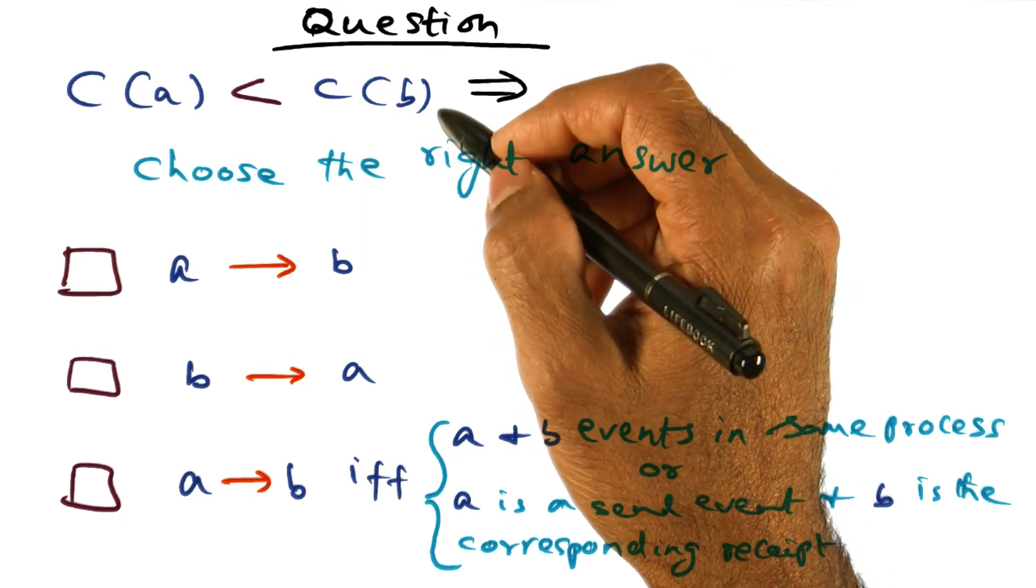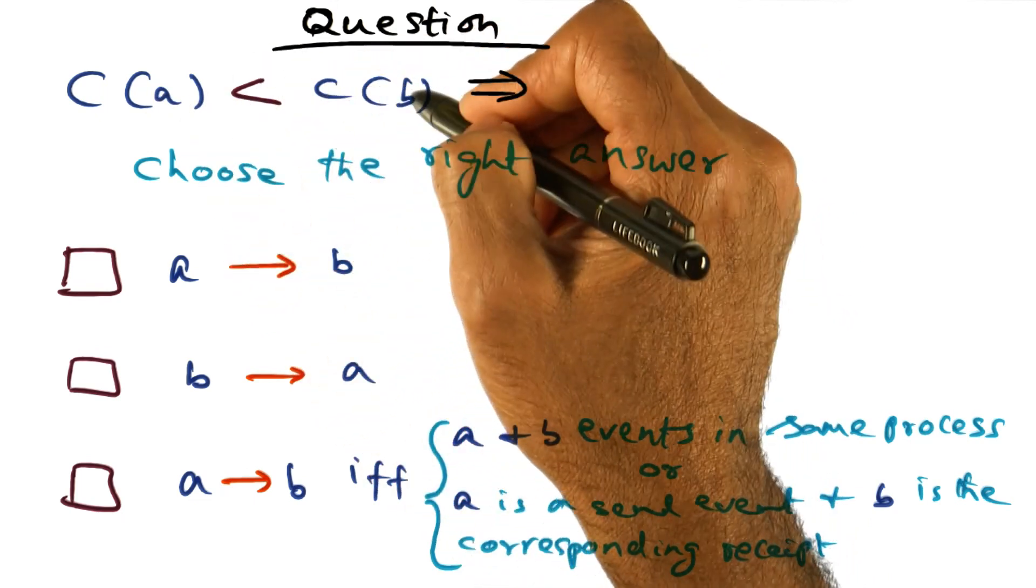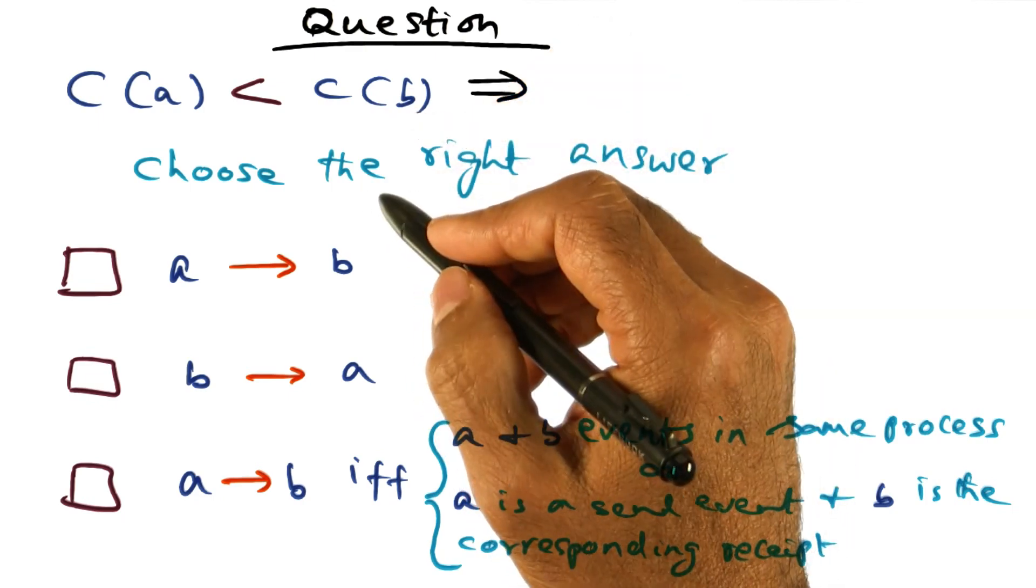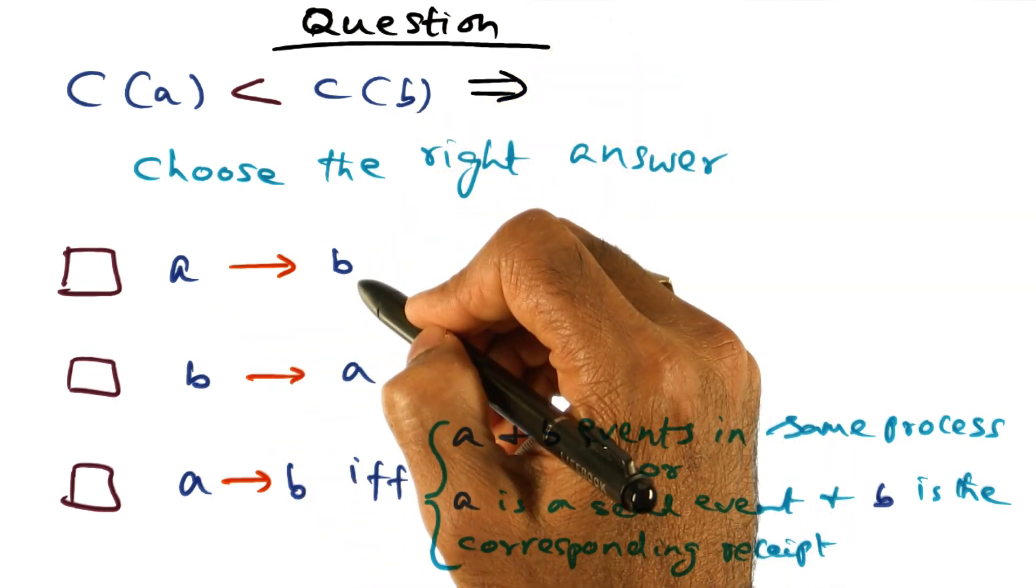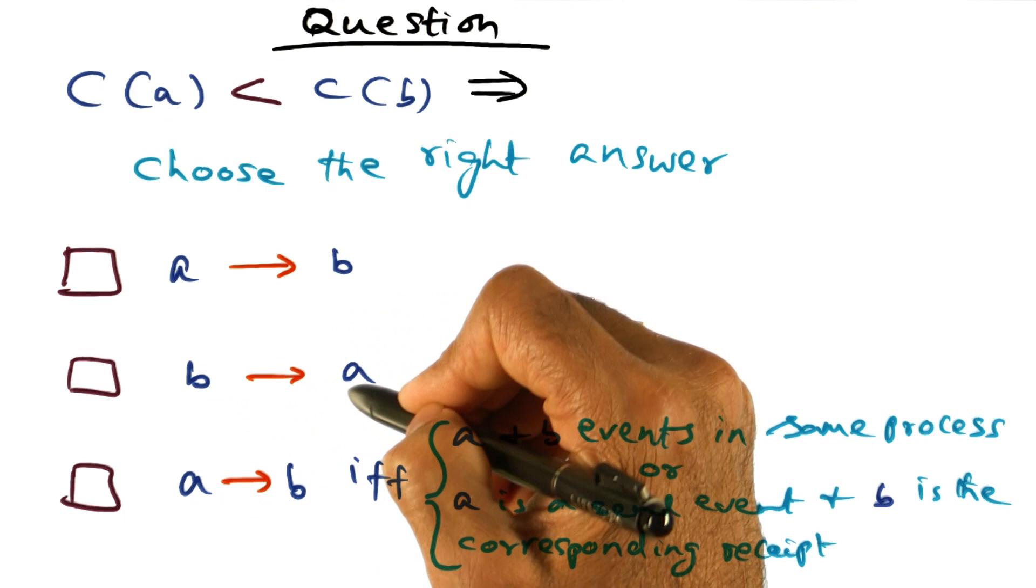And now my question to you is, if C of A is less than C of B, does that mean that A happened before B? Or does it mean B happened before A?